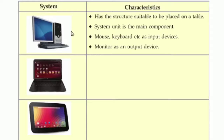The first one is the desktop computer. It has a structure suitable to be placed on a table. It has a monitor, CPU, keyboard, and mouse, and we can also connect speakers to it. So it has a large size and must be placed on a table.